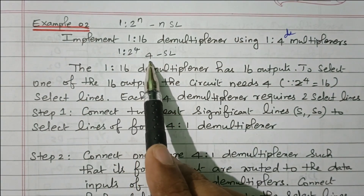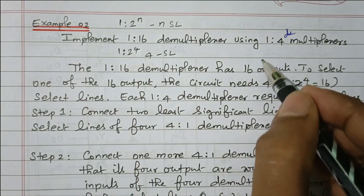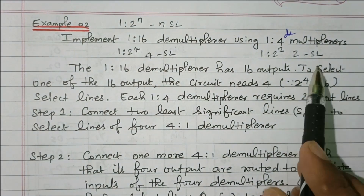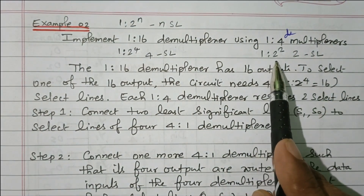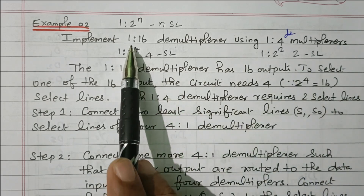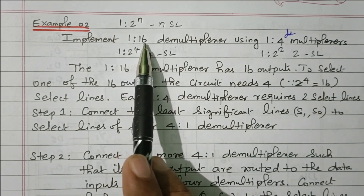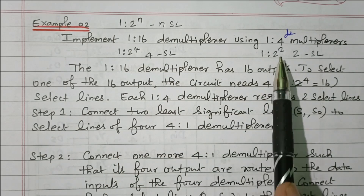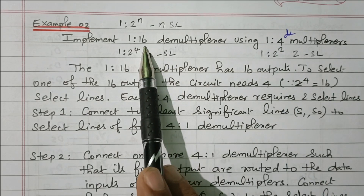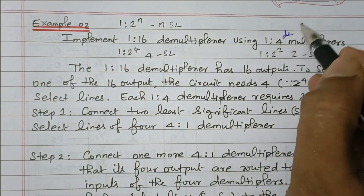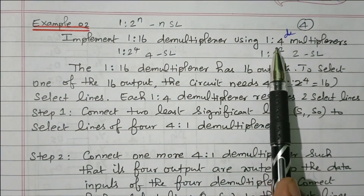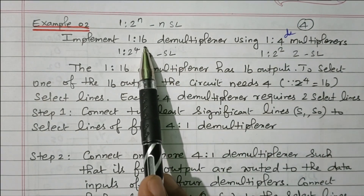1-to-4 means 1-to-2-to-the-power-2, with 2 selection lines — 1 input with 4 outputs, controlled by 2 selection lines. Suppose we want to implement a 1-to-16 multiplexer with 16 outputs. We are using 1-to-4 demultiplexers, so 4 outputs are available per unit. Since we need 16 outputs, we need to use 4 numbers of 1-to-4 demultiplexers, so that 4 into 4 gives 16 outputs.